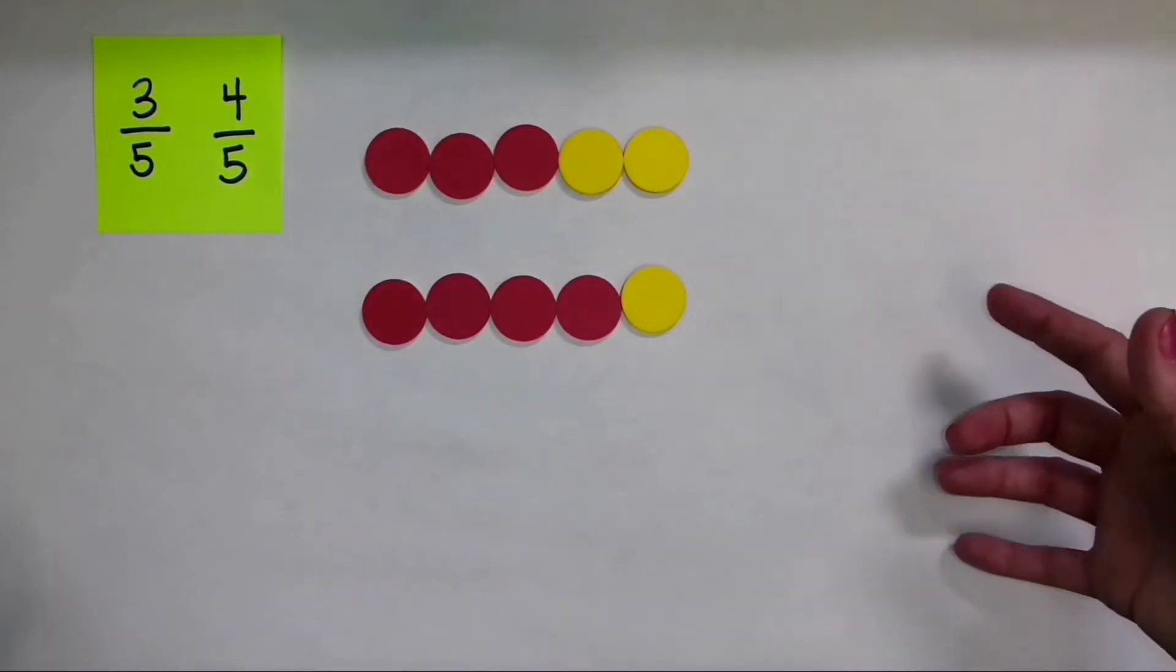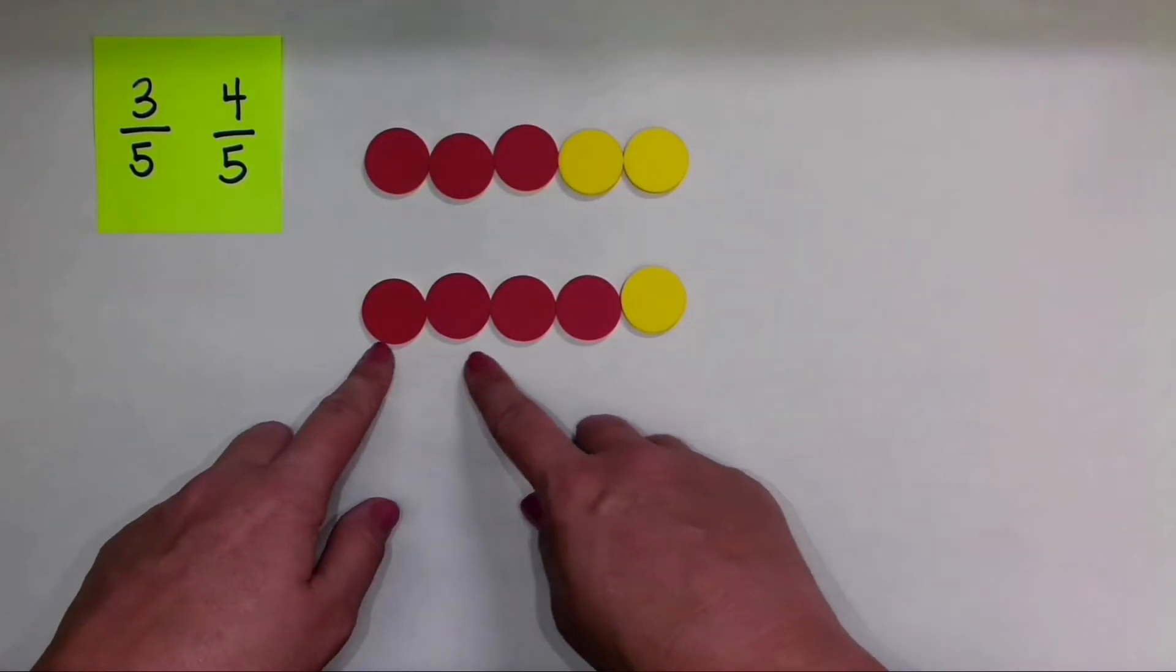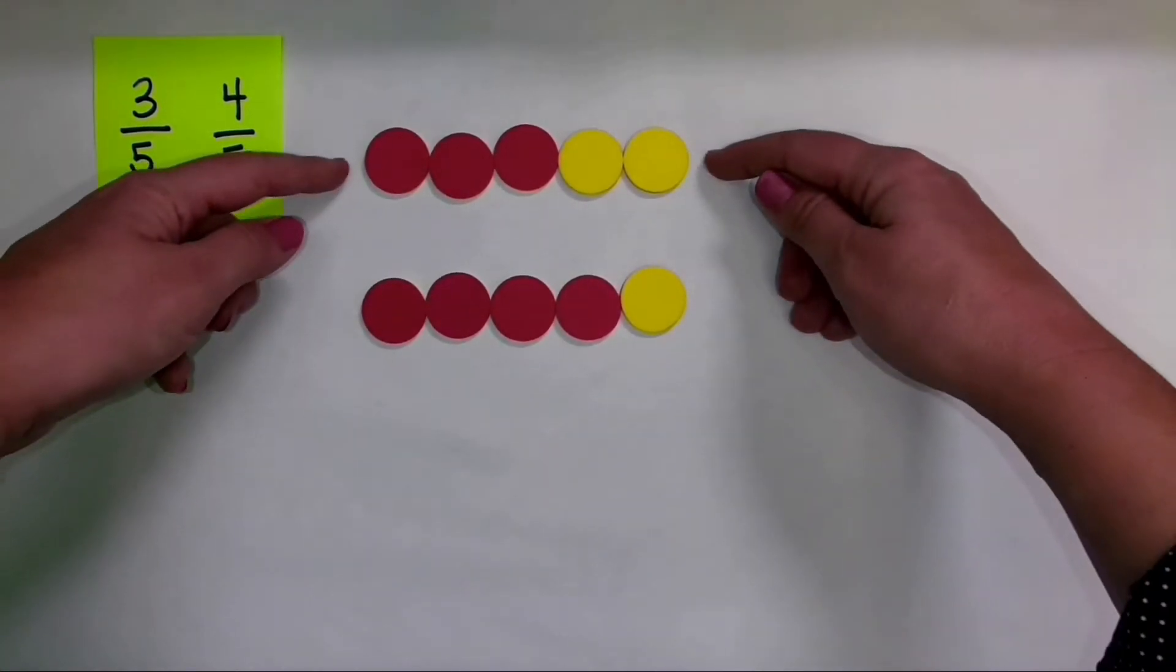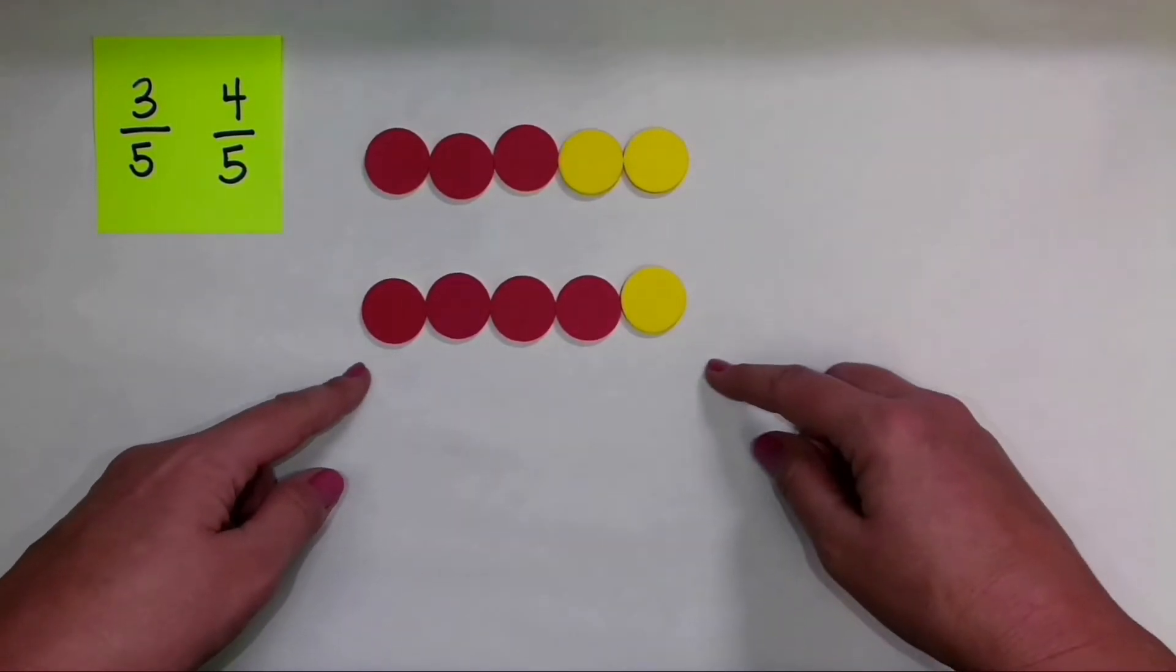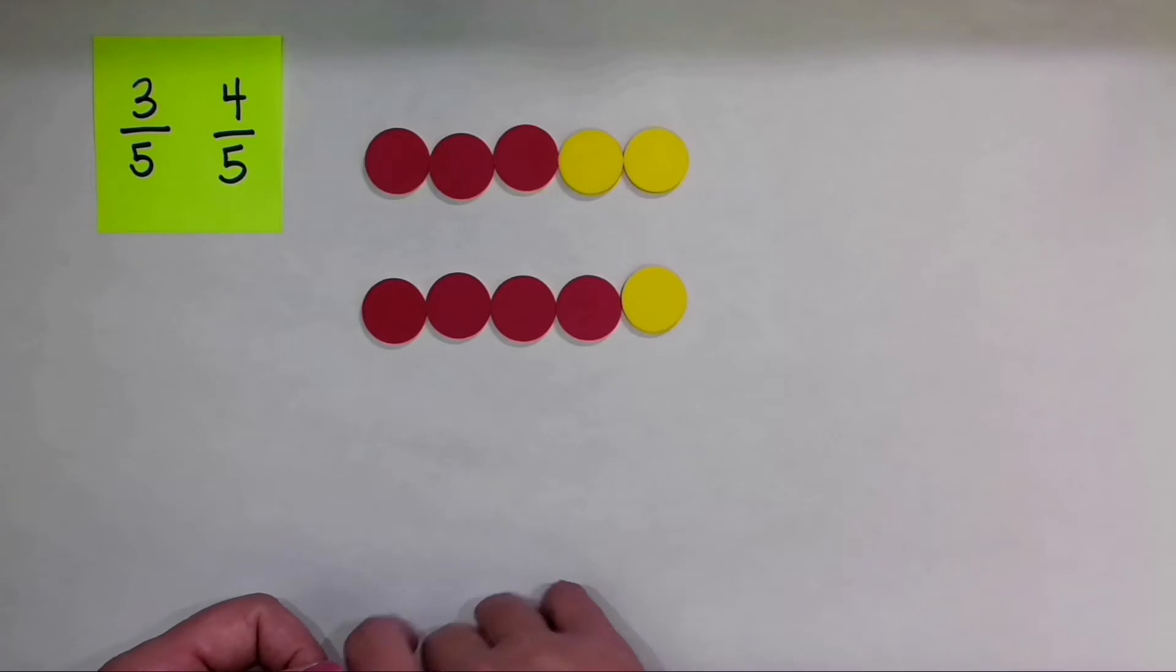Now, when I line them up like this, and this is also kind of showing the length model of fractions, I can see that 4 fifths is greater than 3 fifths, because it has greater length. But I also see that if I have four of the five parts, that's greater than three of the five parts.